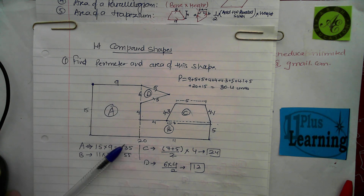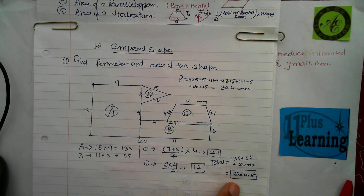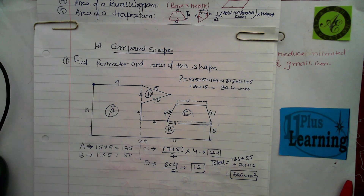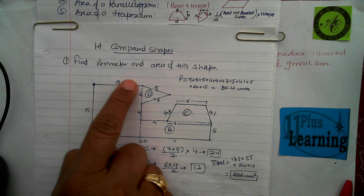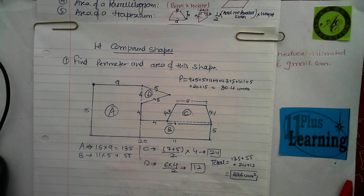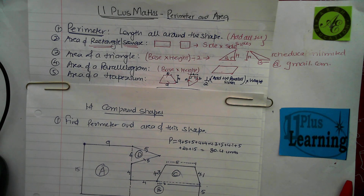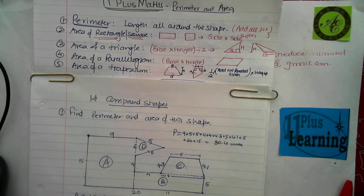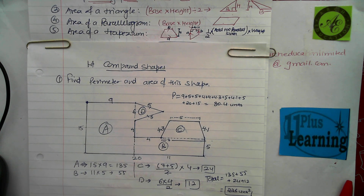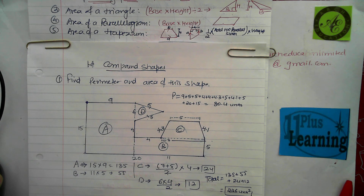The total area of the whole shape is 135 + 55 + 24 + 12 = 226 units squared. To summarise: for perimeter, find the missing lengths and add all sides. For area, know the standard formulas, split the compound shape into parts, and apply the appropriate formula to each part. Thank you very much — enjoy learning!